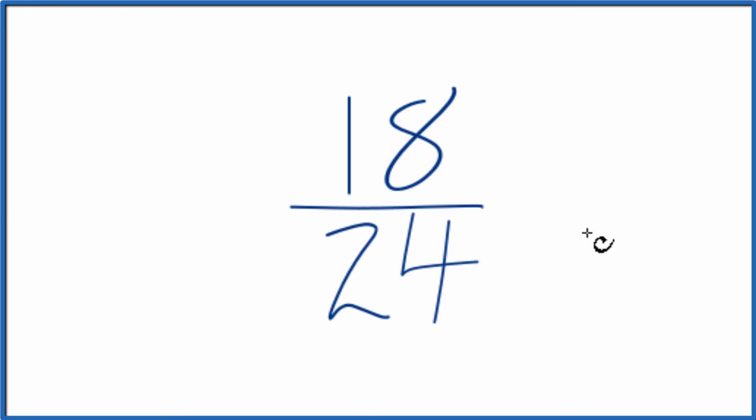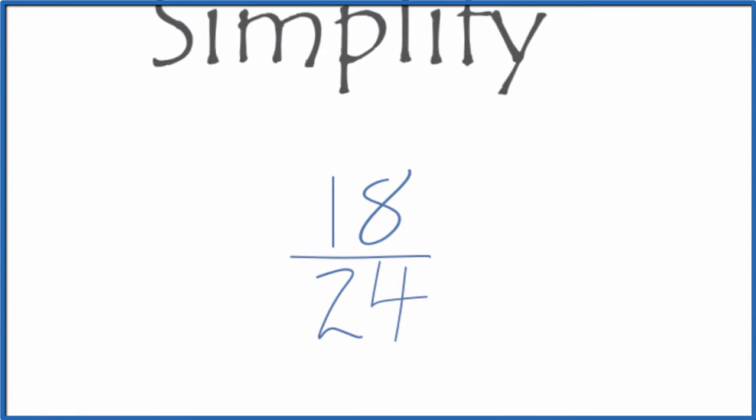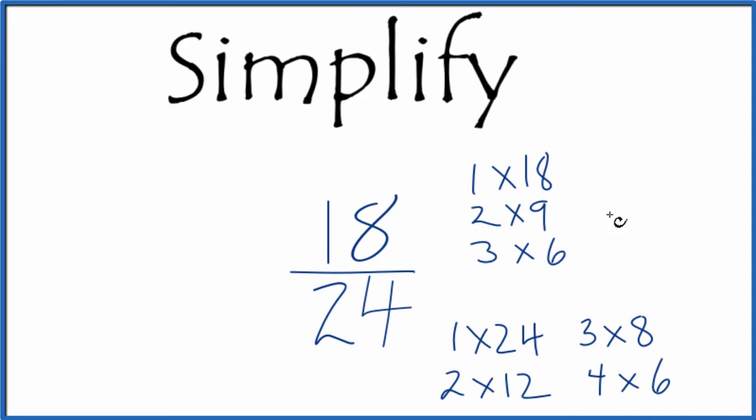What we need to do is find a factor, a common factor that goes into 18 and 24. So here are the factors for 18 and 24.